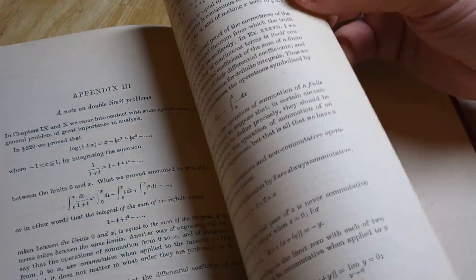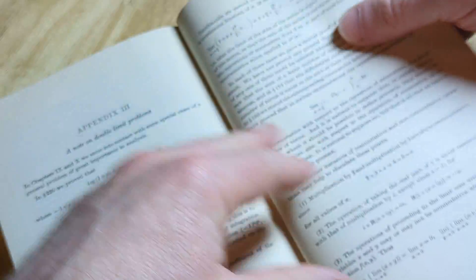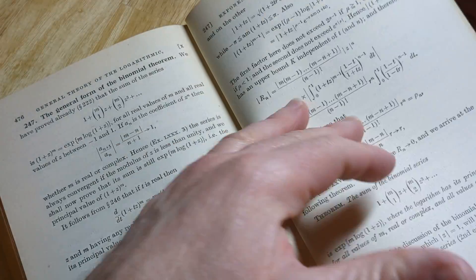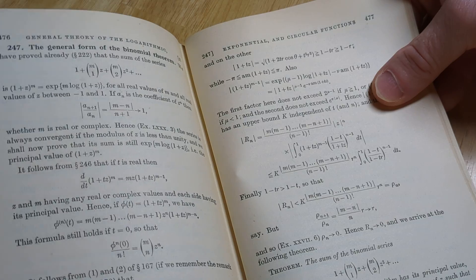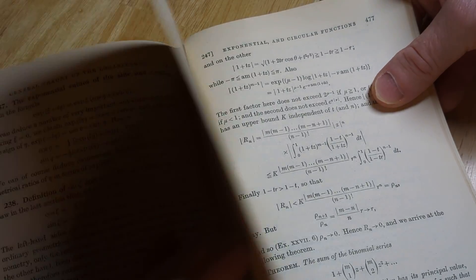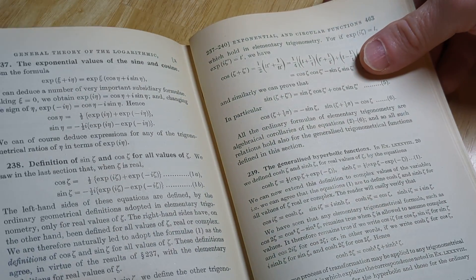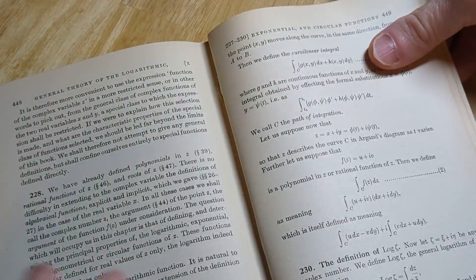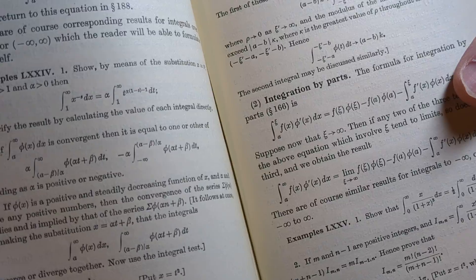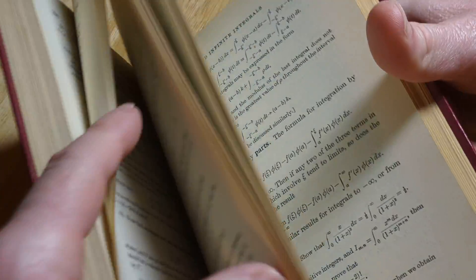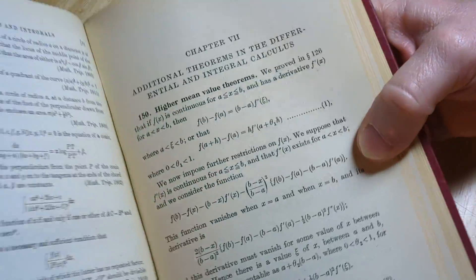There's an appendix at the end. Some exponential stuff here. Logarithmic functions. Hyperbolic functions. Integration by parts. I mean, so much mathematics in this book.